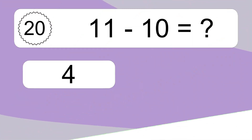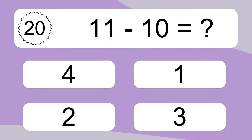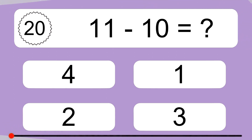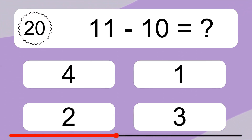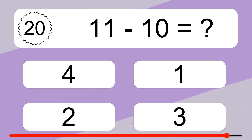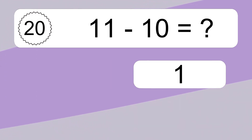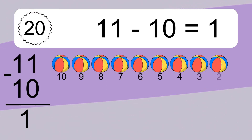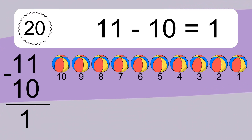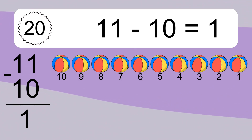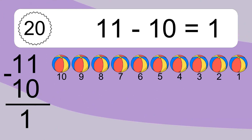11 minus 10 equals what? 11 minus 10 equals 1. Let's count it. 10, 9, 8, 7, 6, 5, 4, 3, 2, 1.